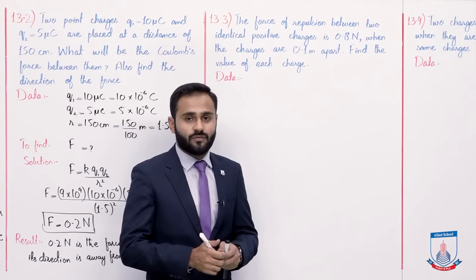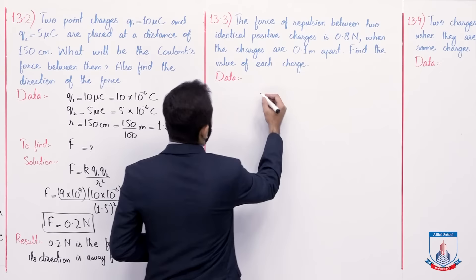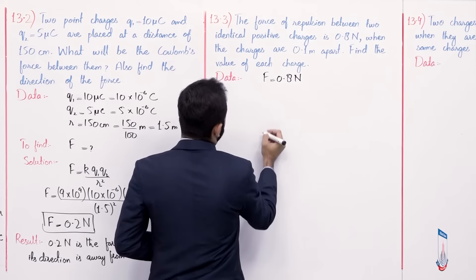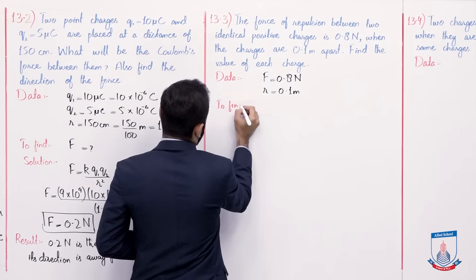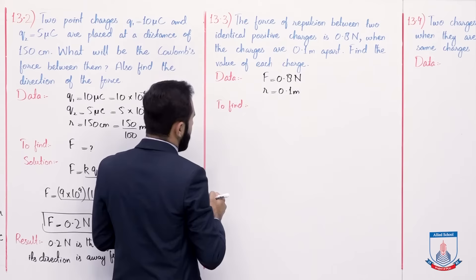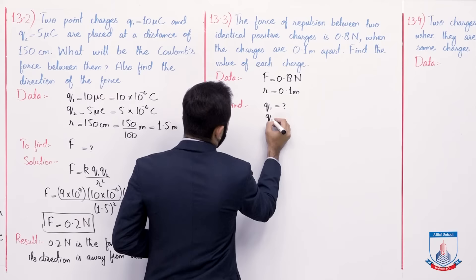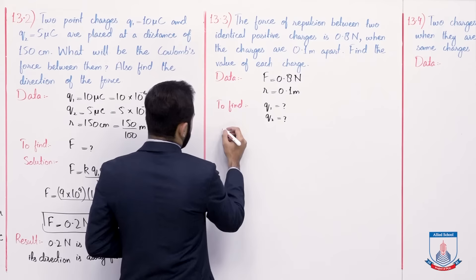So first of all hum data note down kar lete hain. Force hai 0.8 newton, aur distance jo humein diya gya hai r, that is 0.1 meter. So find the value of each charge — to find q1 and q2, hum ne charges find karne hain.